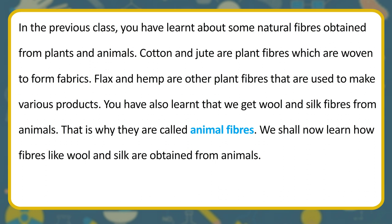In the previous class, you have learnt about some natural fibers obtained from plants and animals. Cotton and Jute are plant fibers which are woven to form fabrics. Flax and Hemp are plant fibers used to make various products. You have also learnt that we get Wool and Silk fibers from animals, which is why they are called animal fibers. We shall now learn how fibers like Wool and Silk are obtained from animals.